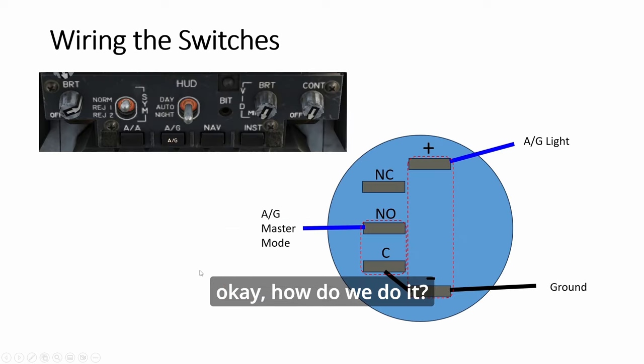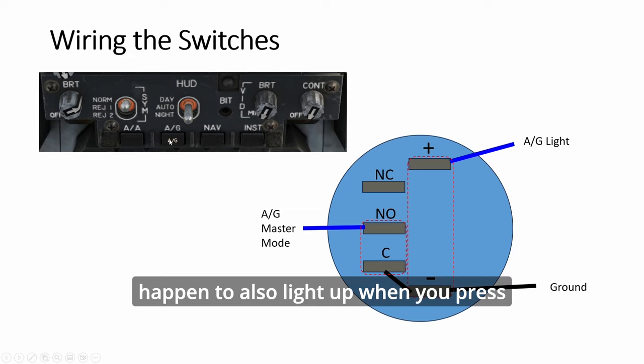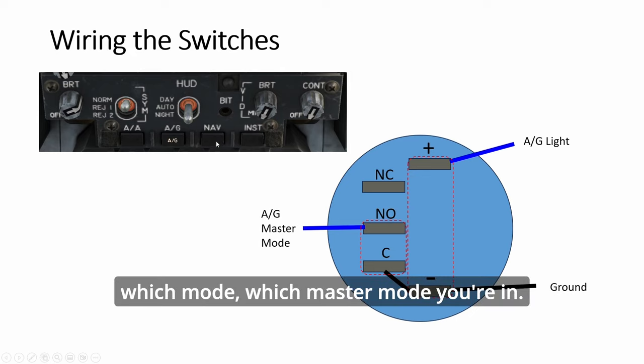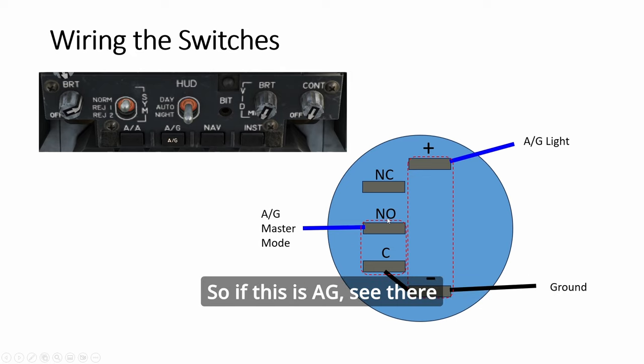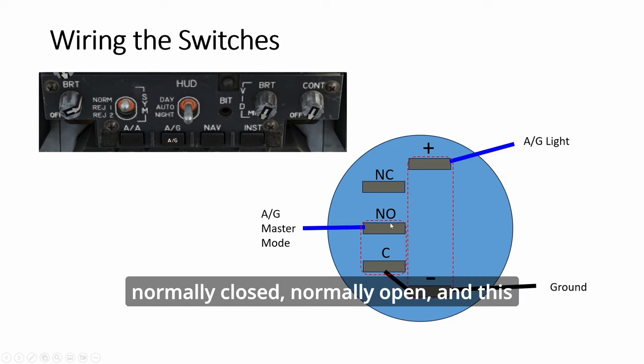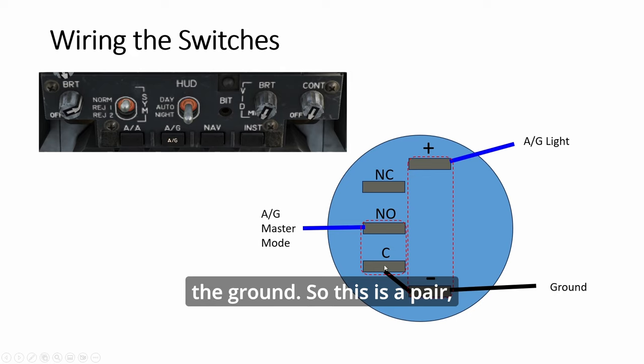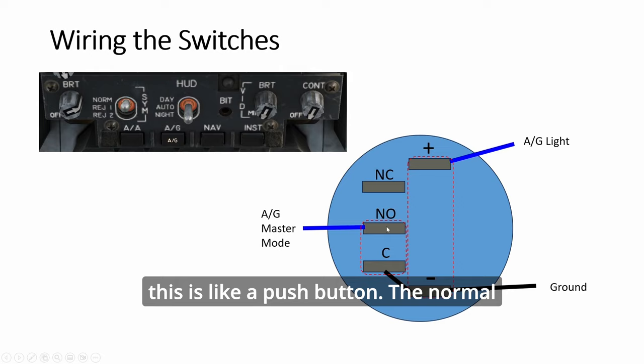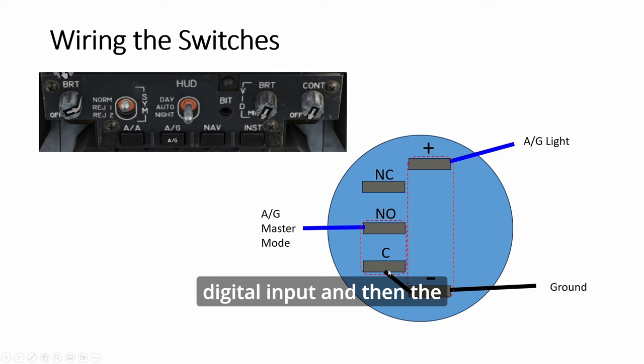So okay, how do we do it? So the four push buttons here, they happen to also light up when you press it. When you press AG, AG lights up. When you press NAV, NAV lights up. Okay? So it shows you which one is being pressed, which mode, which master mode you're in. So if this is AG, see there are two pairs here. This is normally closed, normally open. And this is C for common, which means the ground. So this is a pair. This is like a push button. The normal digital input and then the ground. This is the plus minus for the light.